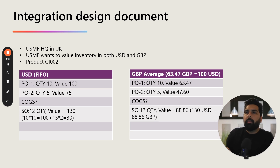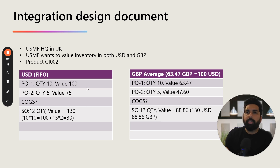The COGS is going to be $130. How? Because the first purchase order came first at $100 value, so 10 quantities go from there, and then 2 quantities come from the next purchase order which will be $30. So the total value is $130. Now if we want to report this inventory transaction — both the purchase and the sales — in GBP, then how global inventory accounting is going to help us and what will be the equivalent value.